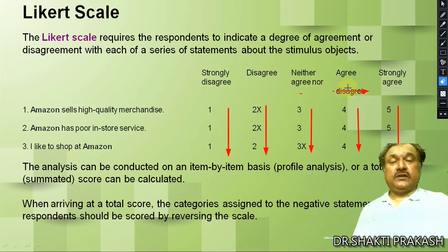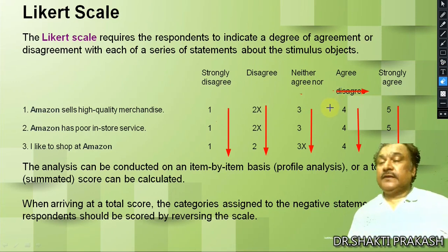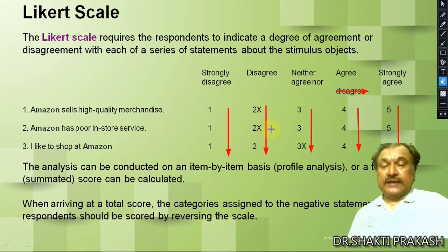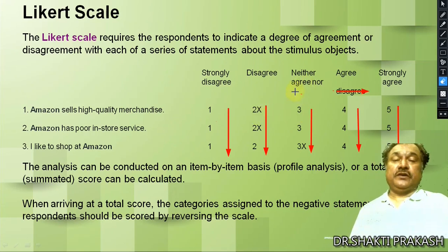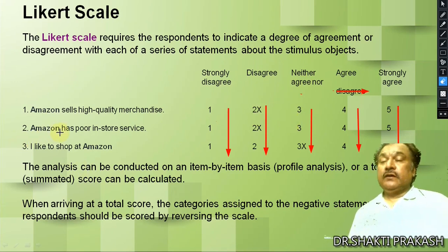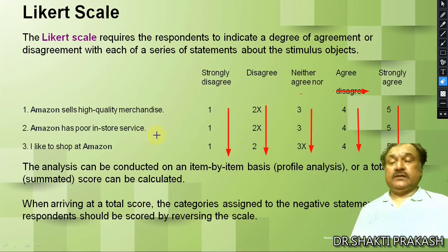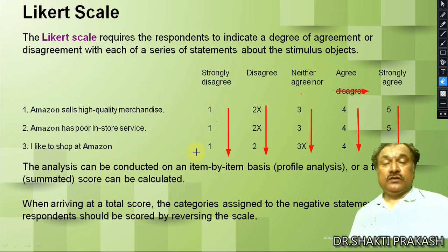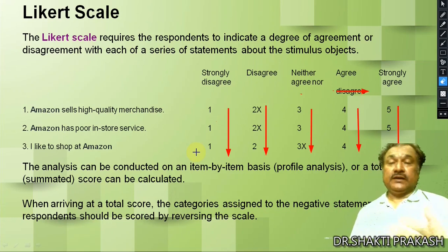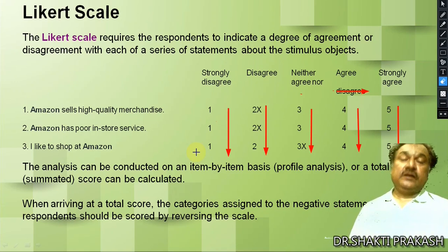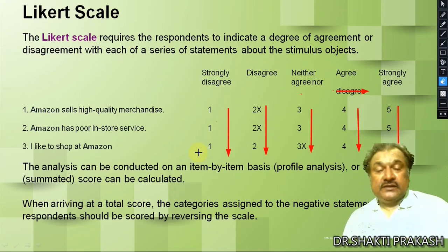Here is an example using a store called Imagen. The question format is: 'Imagen sells high quality merchandise.' A respondent might tick disagree — meaning it is near neutral but on the negative side. Another question: 'Imagen has poor in-store service' — also on the negative side. And 'I like to shop at Imagen' — this is not decided, so its answer is in the negative sense, average negative. The Likert scale is very frequently useful for psychological, attitude, and behavioral parts of research.